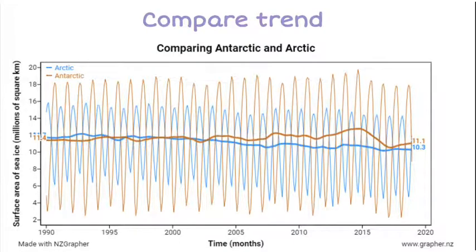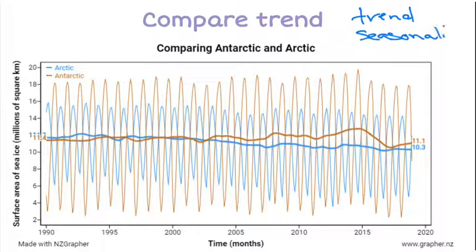For example, I've got my sea ice data here and I've drawn a graph comparing the Antarctic with the Arctic. The reason I've drawn them on the same set of axes is that's a really good way for us to visually compare them. There are a number of different things I want to compare: think about our trend, think about our seasonality, and think about the variation. Those are our three big features and we want to be able to discuss and compare them.